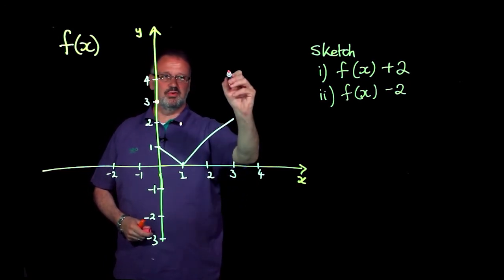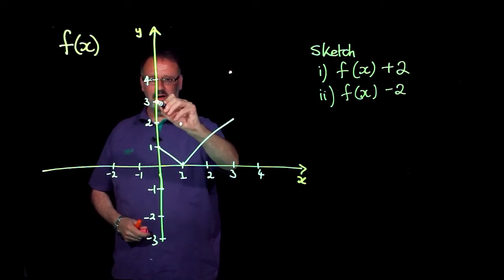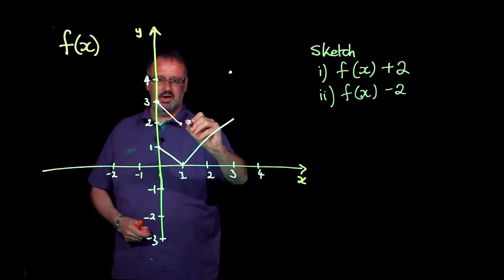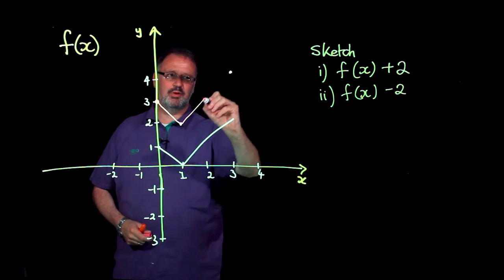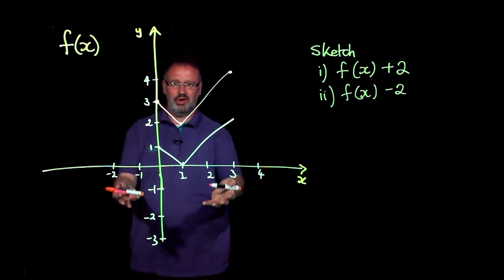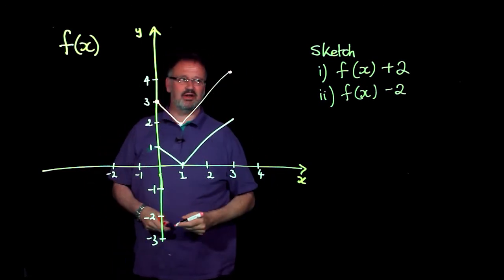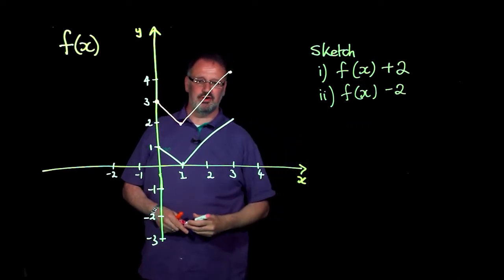This one goes up by 2 to there, and so in other words I get exactly the same shape of graph but physically it has been moved up the y-axis by positive 2 units.